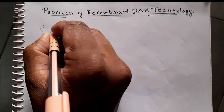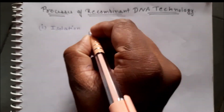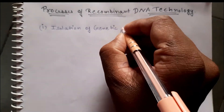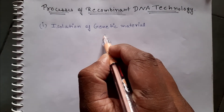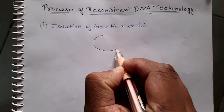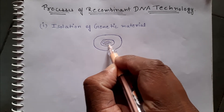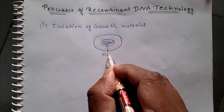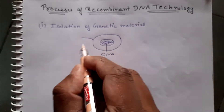The first step is isolation of genetic material. As the name suggests, if we want to get the desired product we have to isolate the genetic material from a cell which produces that product, and that DNA will be transferred into a host organism. For the isolation of genetic material, we isolate the DNA from bacterial cells, fungal cells, or plant cells.